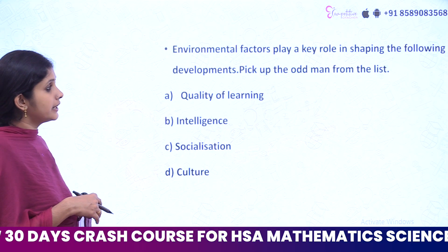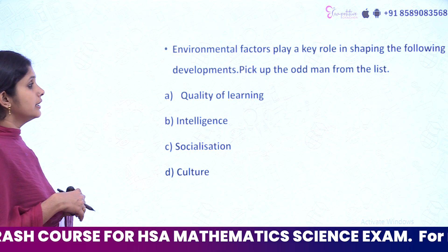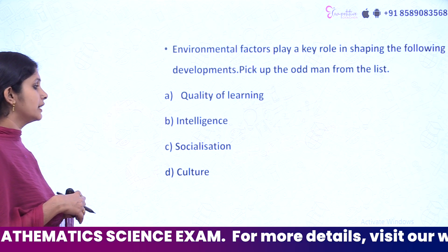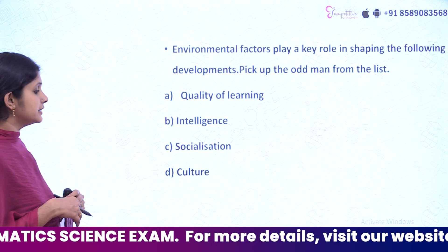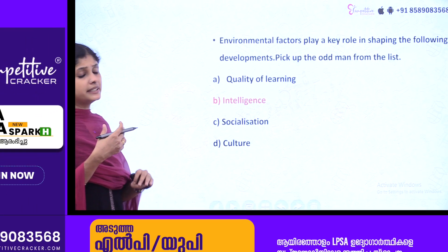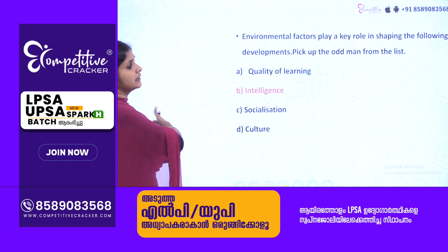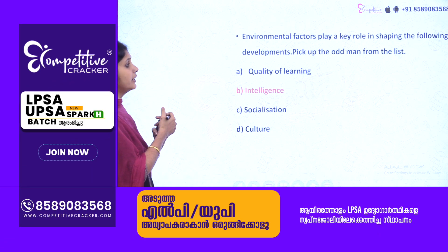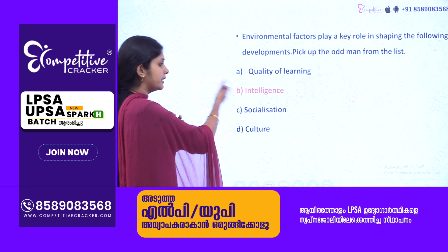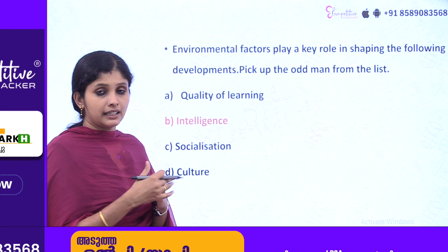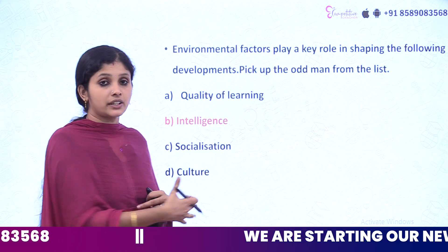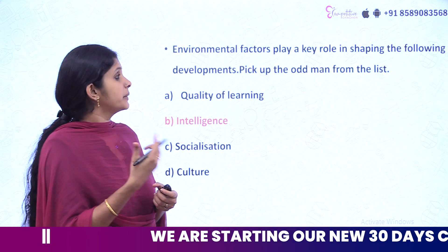Environmental factors play a key role in shaping the following developments. Pick up the odd man from the list — Quality of learning, Intelligence, Socialization, Culture. Intelligence is not the environment — it is not an environmental factor. Quality of learning, socialization, and culture are environmental factors. So intelligence is the odd one out.